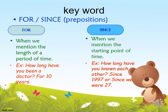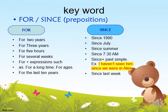We use since to talk about the starting point of something. How long have you known each other? Since 1997 — or since we were 27. Concerning for, we can say: for two years, for three years, for five hours, for several weeks. We also use for with expressions like: for a long time, for ages, for the last 10 years. Note that the last is also followed by a length of time.